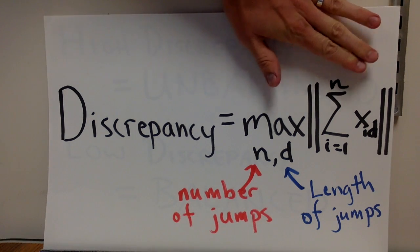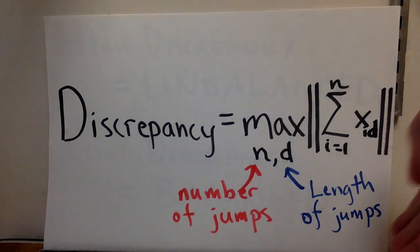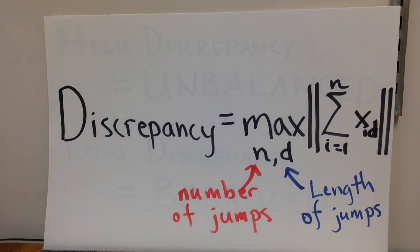So you can ignore a lot of this notation. The important thing is that I'm going to specify some number of jumps, n, and I'm going to specify some length of my jumps, d. And then I'm going to say, well, take that n and d and sum up the first n multiples of d and think about how big is that value? How far away is it from zero? And that's my discrepancy.